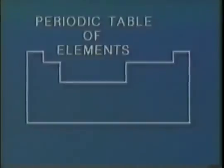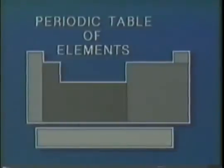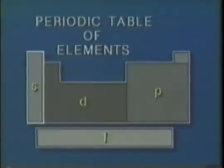The orbitals that are being filled, or are the last to have been filled, have the most bearing on the chemical properties of the atom. It is also interesting to note that the periodic table of the elements can be neatly divided into sections. For all the elements in a particular section, the same orbitals are being filled. As a result, the elements of a particular block have a number of similar properties.